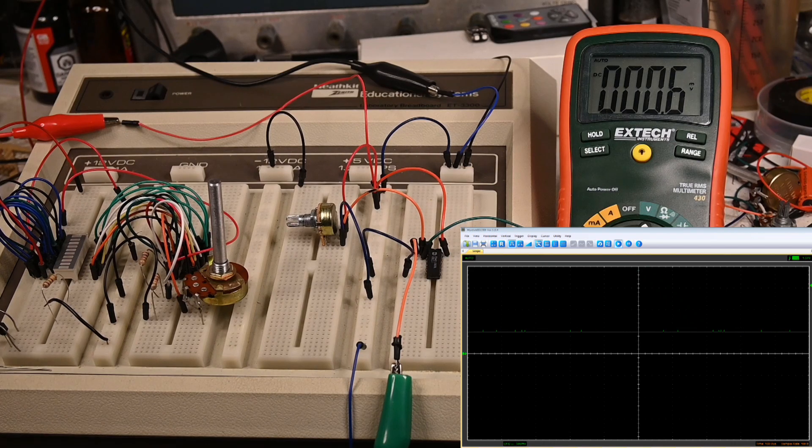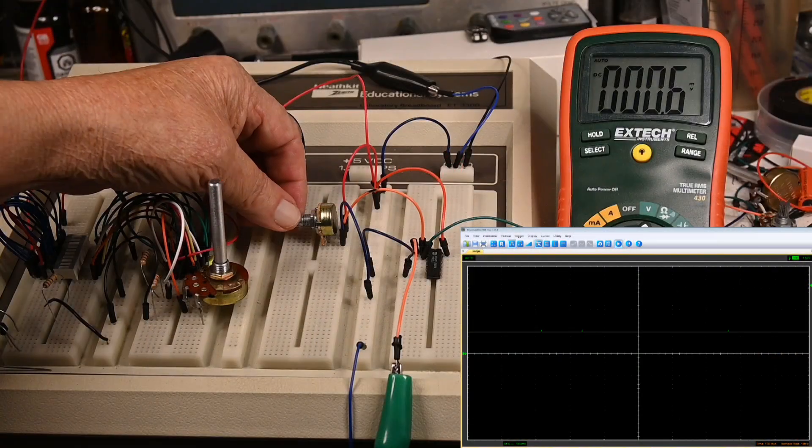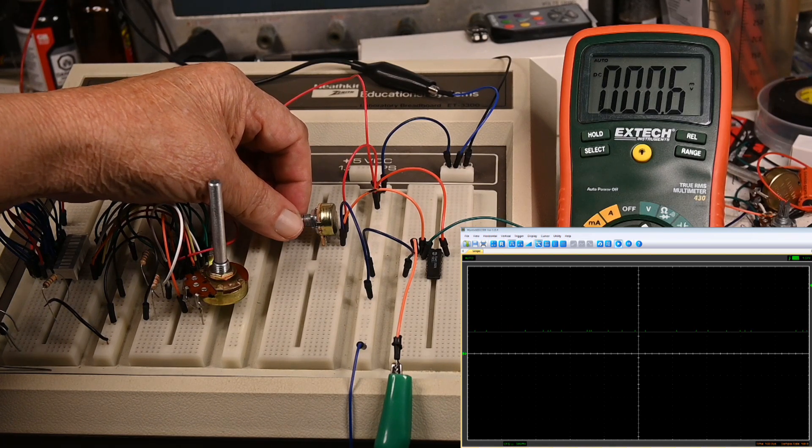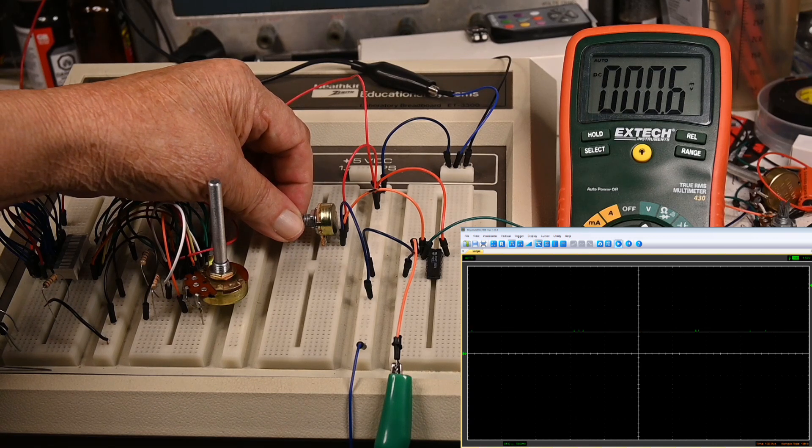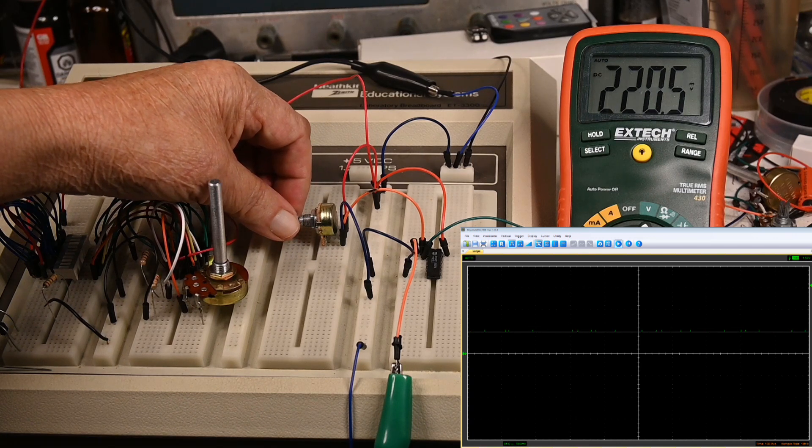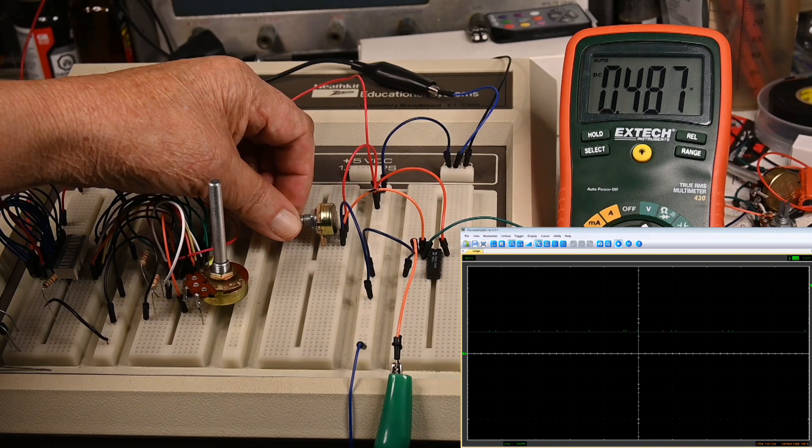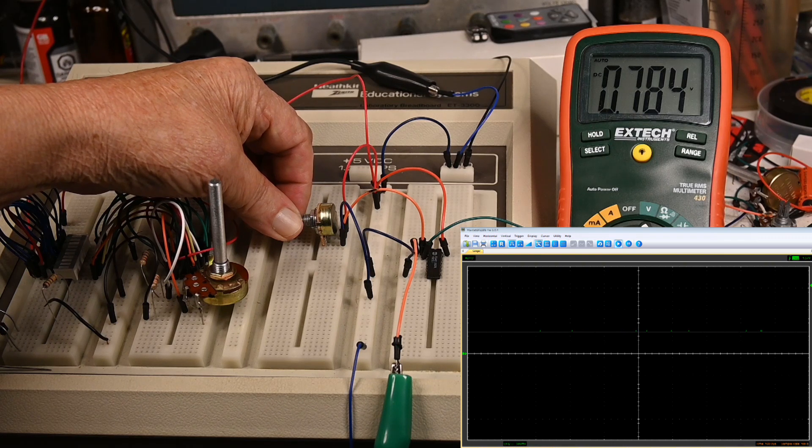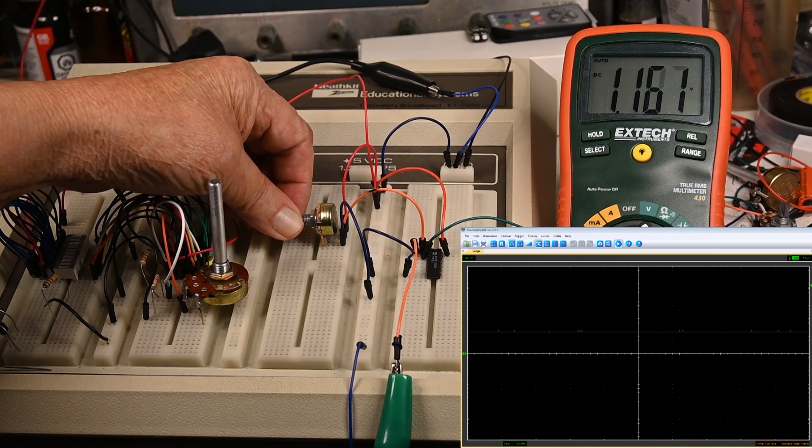Now, I've got this set up on 5 volts, and I'll be watching the scope to see when it triggers. Okay, now we're up about half a volt. 1 volt.